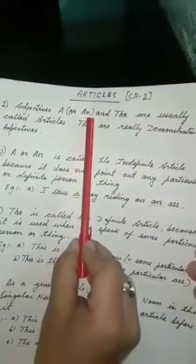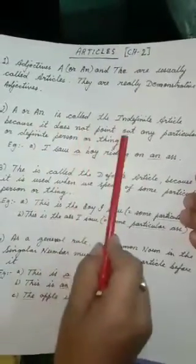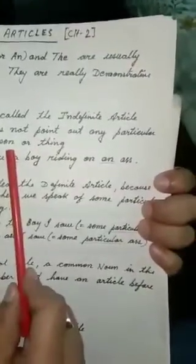Articles. Adjectives A or AN and THE are usually called articles. They are really demonstrative adjectives. AN is an indefinite article and THE is a definite article.